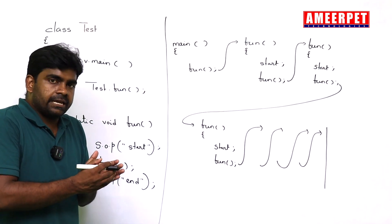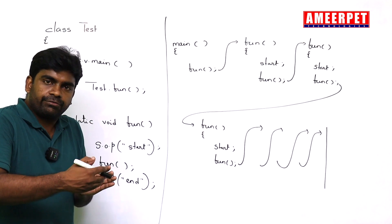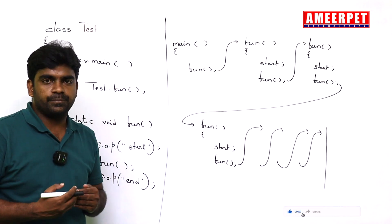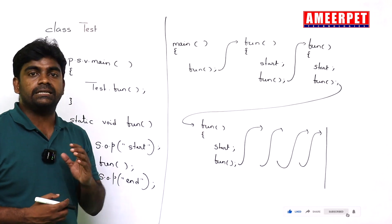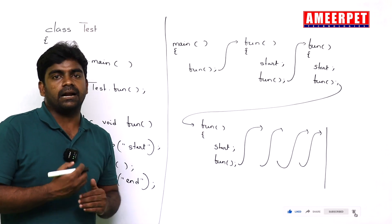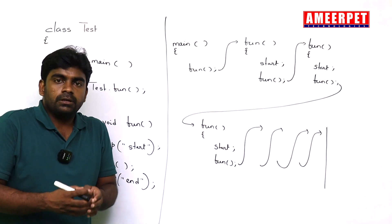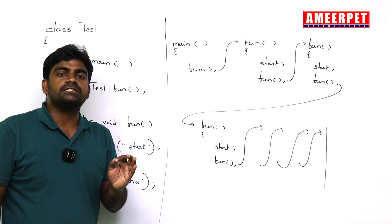Until the memory is available. Because whenever it is keep on allocating the memory for methods, somewhere definitely the memory will be full. Then automatically the program execution terminates in run time. The memory will be full, so the program terminates automatically.